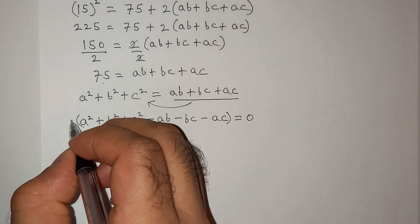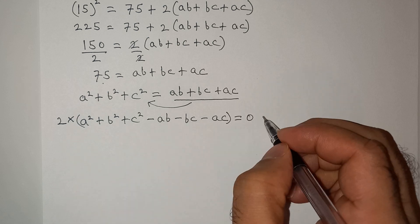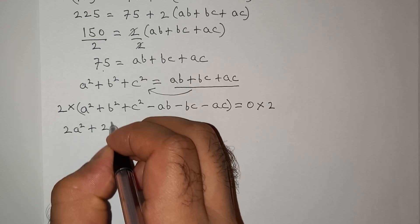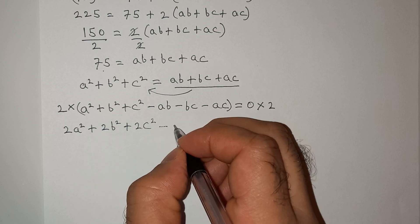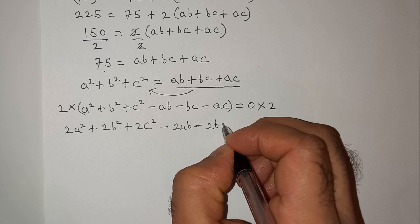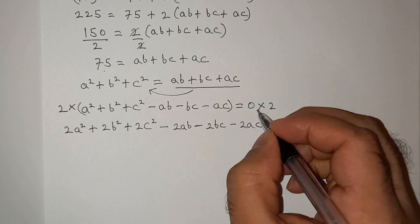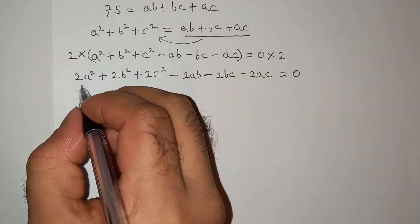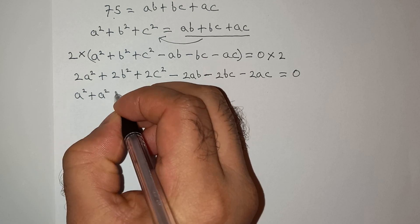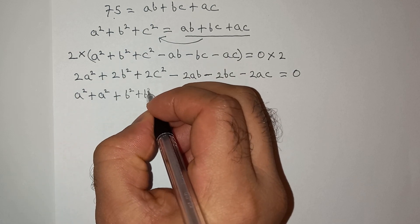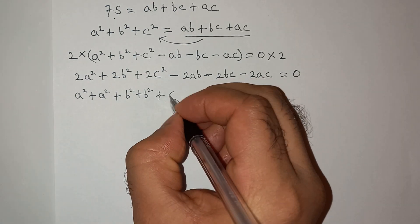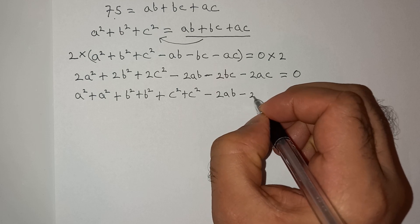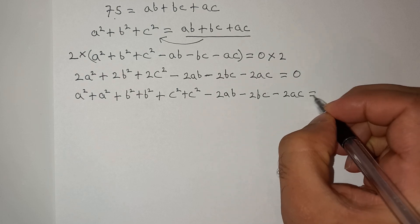Now I am going to multiply 2 on both sides. This gives 2a squared plus 2b squared plus 2c squared minus 2ab minus 2bc minus 2ac equals 0. We can rewrite 2a squared as a squared plus a squared, 2b squared as b squared plus b squared, and 2c squared as c squared plus c squared.